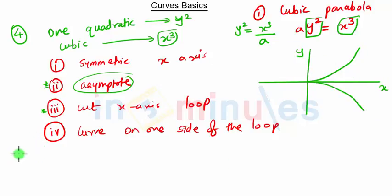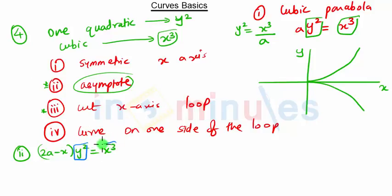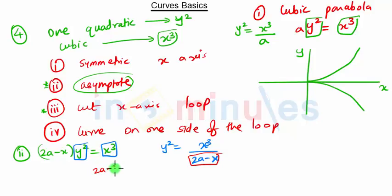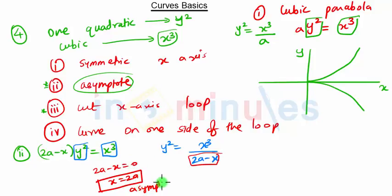The second curve is (2a - x)y² = x³. This equation is also quadratic in y and cubic in x. We write it as y² = x³ / (2a - x). Putting the denominator equal to zero gives 2a - x = 0, so x = 2a. The line x = 2a represents the asymptote.